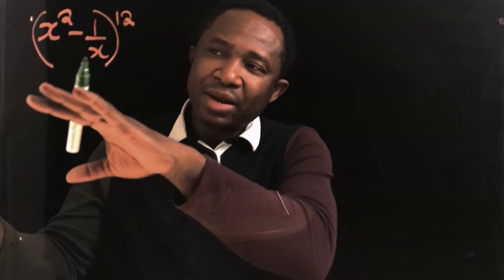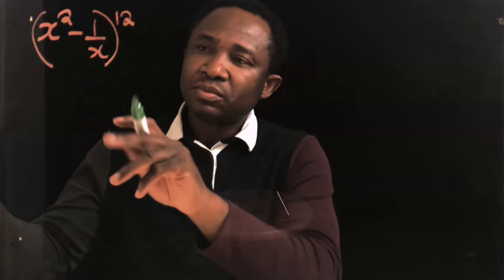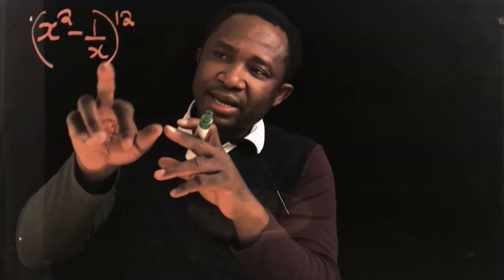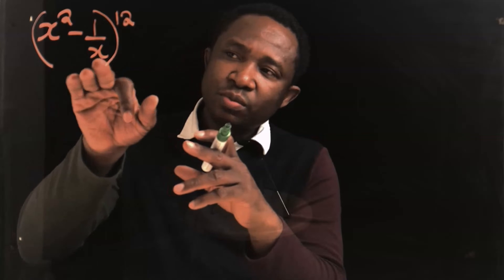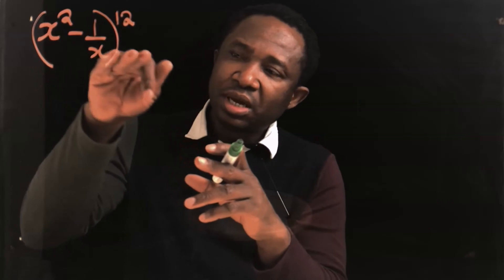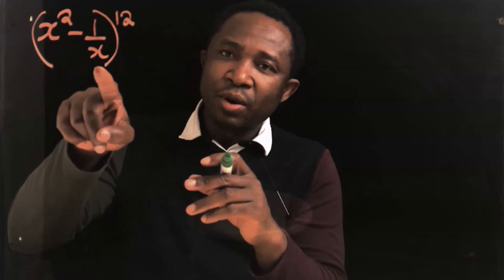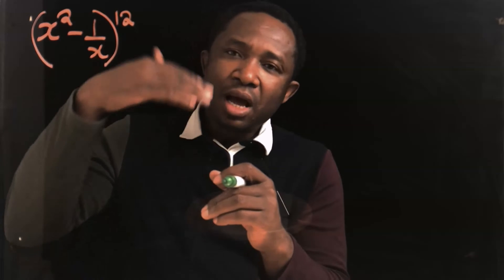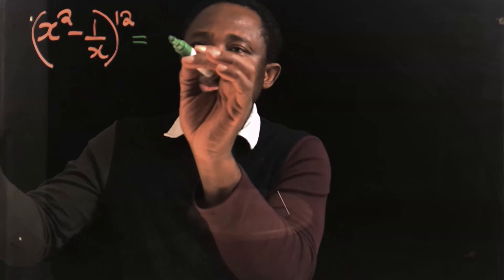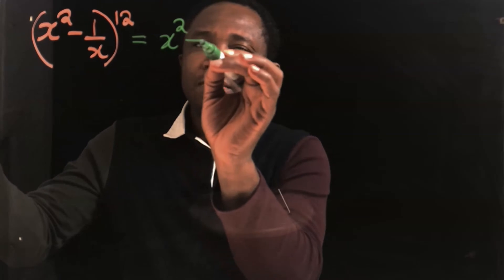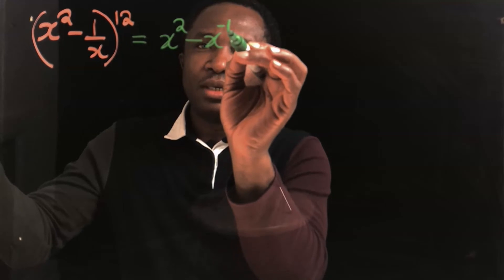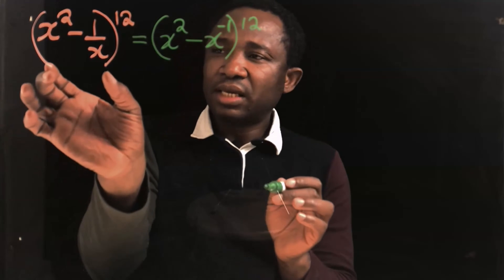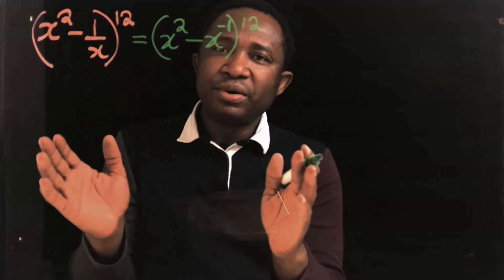Before we apply binomial expansion to this problem, this variable will move up. We are going to apply the law of indices to make sure that all the variables are linear. Because this is a variable, we take it up — that is, we are going to have x squared minus x to the power of minus 1, all to the power of 12. This and this both are the same.